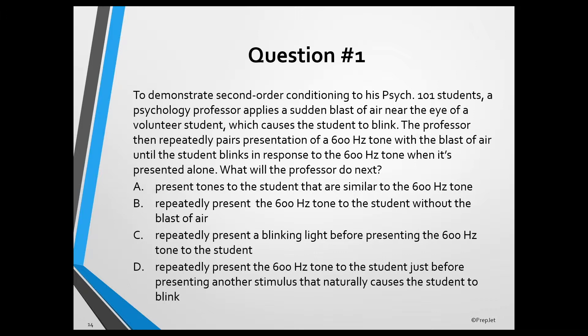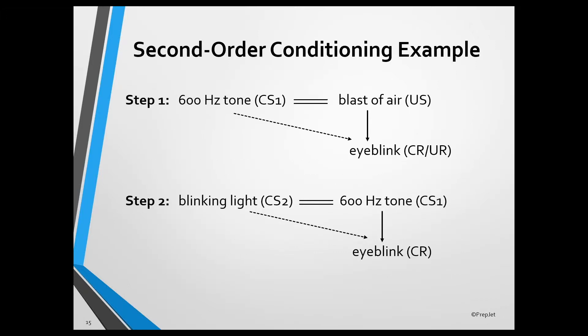The next slide might help clarify this procedure. When using second-order conditioning, the first step is classical conditioning, which involves repeatedly pairing presentation of a neutral stimulus with an unconditioned stimulus that naturally elicits an unconditioned response. As a result, the neutral stimulus becomes a conditioned stimulus and elicits a conditioned response similar to the unconditioned response. In this example, the 600 Hertz tone becomes a conditioned stimulus and elicits a conditioned eye blink response after it's paired with the blast of air, which is the unconditioned stimulus.